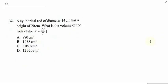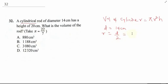This question says a cylindrical rod of diameter 14 cm has a height of 20 cm. What is the volume of the rod? The rod is a cylinder, so the volume of a cylinder is pi r squared h. We're given diameter to be 14 cm, and therefore radius will be diameter divided by 2, which is 14 divided by 2, giving us 7 cm.